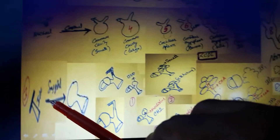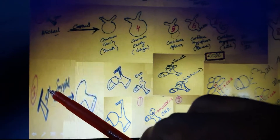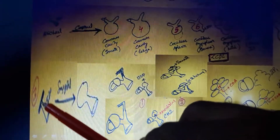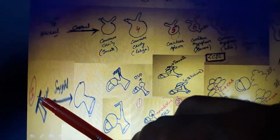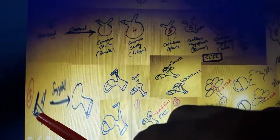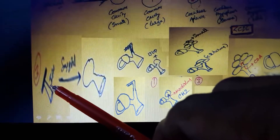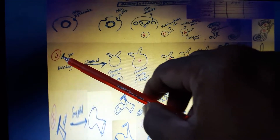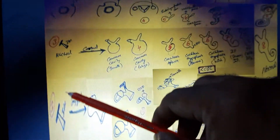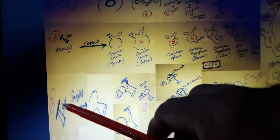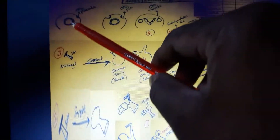In axial view, in Michel's abnormality, you will see the IAC and the whole inner ear is like a small mass — no internal inner ear structure. So in this situation, there is no option for cochlear implant; you must do the auditory brainstem implant. If arrest happens at the otic placode, in axial view you see a small mass lateral to the IAC.